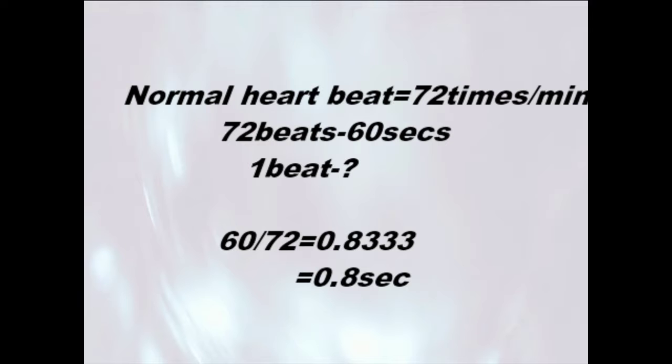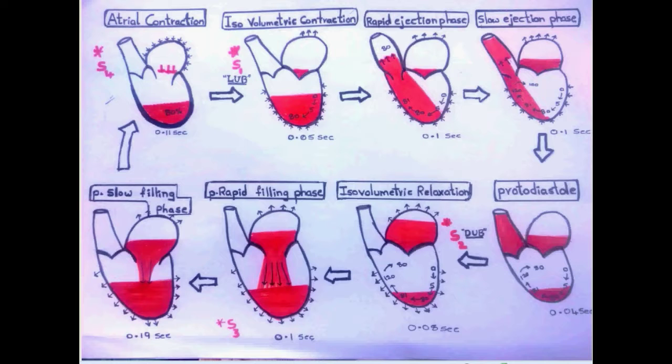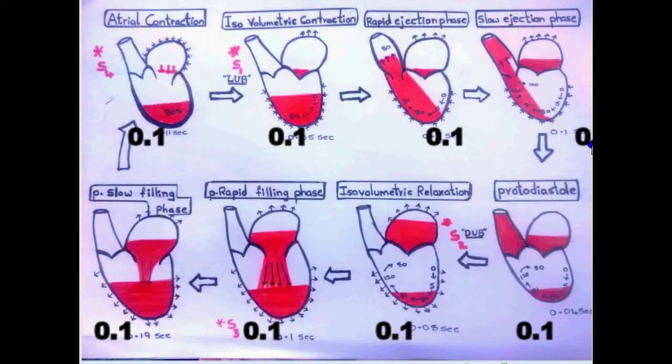Let's see the time taken for total atrial contraction and relaxation, and time taken for total ventricle contraction and relaxation. Here we have different timings like 0.11 seconds for atrial contraction, 0.04 seconds for protodiastole, and so on. But on average, let's take each stage as 0.1 seconds. Don't worry, the sum is not going to change.